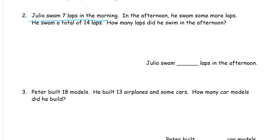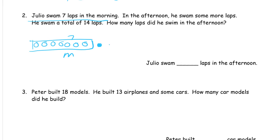He swam 7 in the morning. I'm going to draw those — 1 through 7. I can make a piece of tape, call it 7, and label it M for morning laps. In the afternoon he swam some more. I don't know how many to draw, but I know the total is 14. So if this is 7, I need to draw more — 8, 9, 10, 11, 12, 13, 14. Now I can just count how many of these afternoon ones are: 1, 2, 3, 4, 5, 6 — there's 7 there.